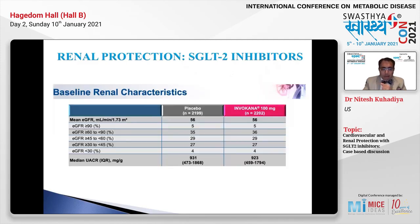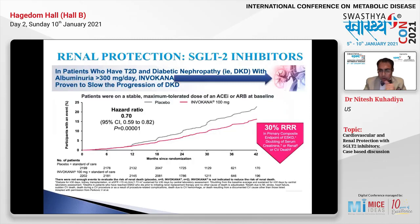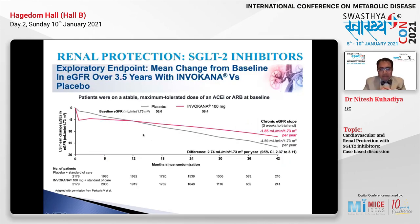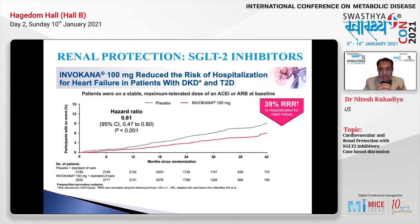In this group with a mean GFR of 56 and median urine albumin-creatinine ratio of 930, we see a 30% relative risk reduction in the primary composite endpoint of end-stage kidney disease, doubling of serum creatinine, or renal or cardiovascular death. This benefit is seen after 12 months of therapy, when the curves start to separate nicely. The rate of GFR decline was 1.85 mL/min/m² per year in canagliflozin-treated patients versus 4.59 mL/min/m² per year in the placebo group — significantly slowing GFR decline. These patients also had a lower risk of hospitalization for heart failure.